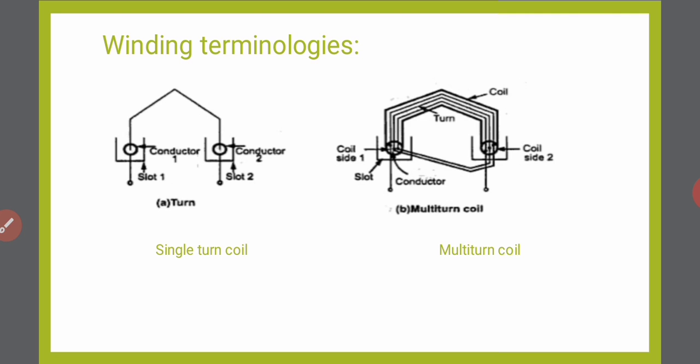The next term is turn. The conductor in slot 1 is connected to the conductor in slot 2 — this forms a turn. As shown in figure B, there are N numbers of turns. If N numbers of turns group together, it forms a coil. If there is only a single turn, the coil is called a single-turn coil. If there are N numbers of turns, as in figure B, that coil is called a multi-turn coil.